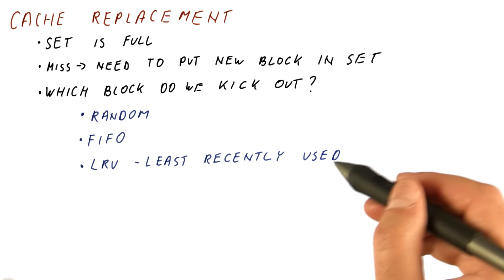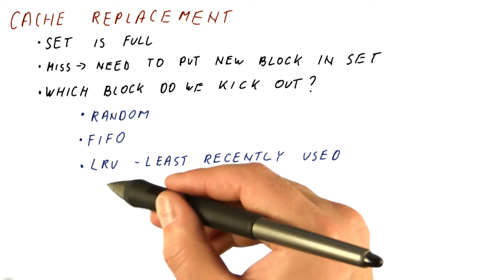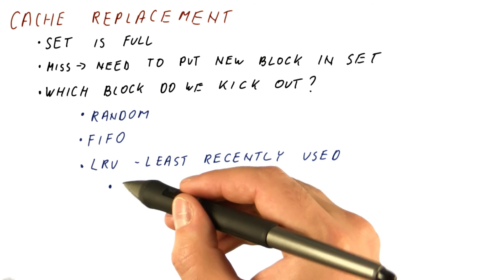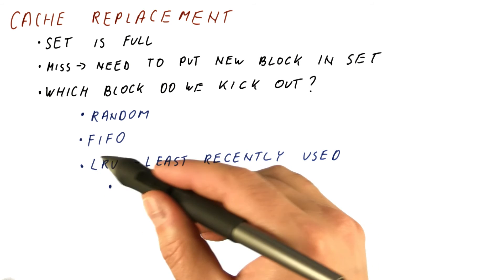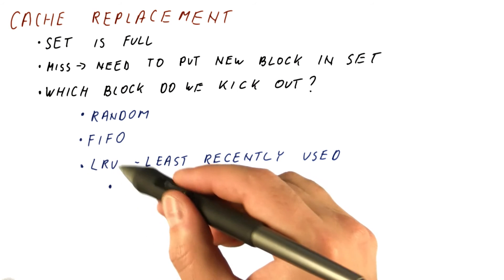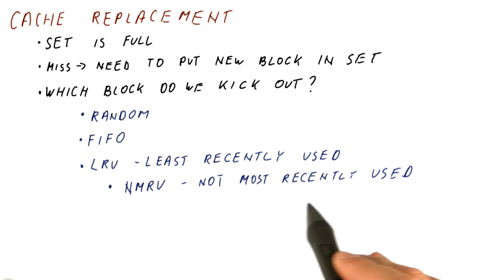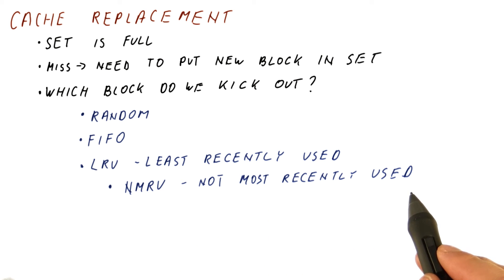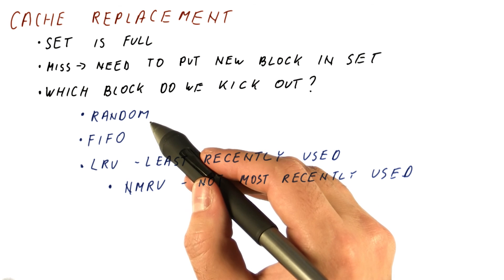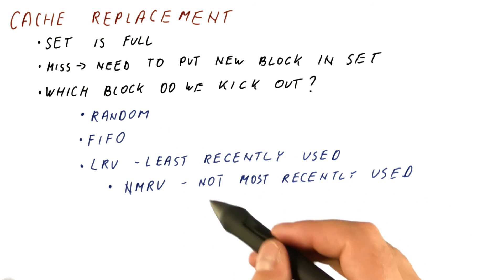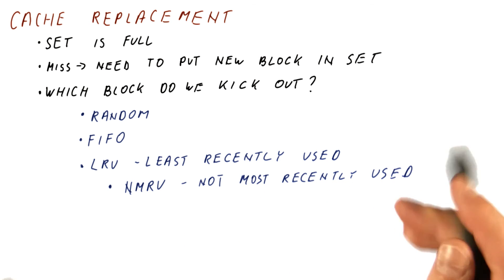It turns out that LRU is a really good policy, so there are several policies trying to approximate it, because it is not easy to implement. One such policy is NMRU, or Not Most Recently Used, which tracks just which block has been used most recently and then picks randomly among the remaining blocks — pretty much, don't pick the block that was just used.